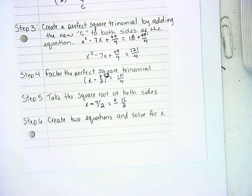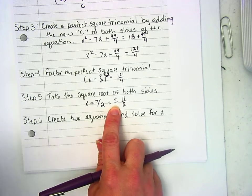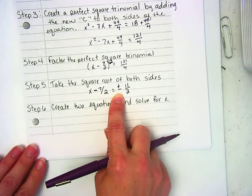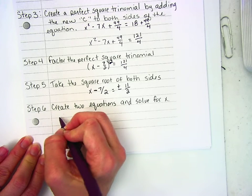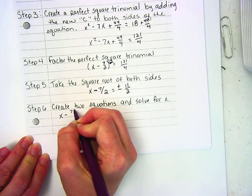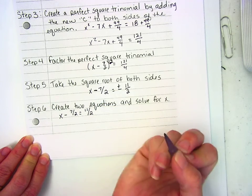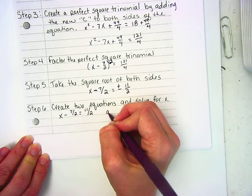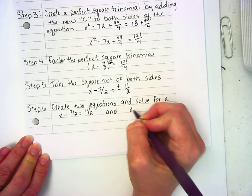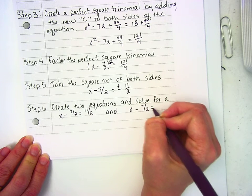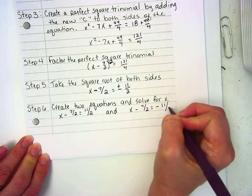Oh look at that, it works out nice and pretty. So now this sets me up with two new equations that I'm solving for x. And I'm going to write them both out: x - 7/2 = 11/2, the positive form, and x - 7/2 = -11/2, the negative form.